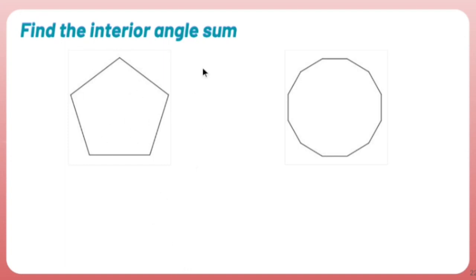Well, there's a formula for the interior angle sum. S equals 180 times the number of sides minus 2. N here stands for the number of sides.